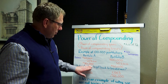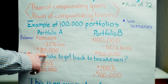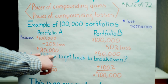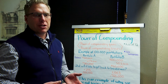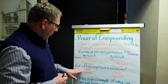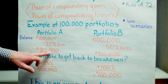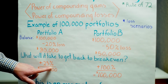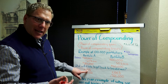Portfolio A, if it loses 20 percent, is now down to 80 thousand. So when all the dust clears and the market bottom is set — which no one knows until retrospect — we've got 80 thousand left and 50 thousand left respectively. To get back to just breaking even on Portfolio A: if you have 80 thousand you're going to need to earn a 25 percent return. Eighty thousand dollars with a 25 percent return nets a 20 thousand dollar gain, which gets you back up to a hundred.